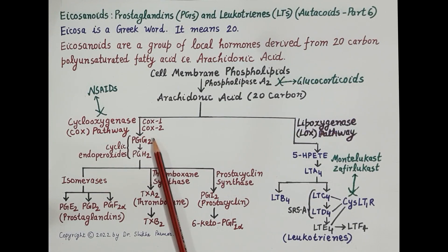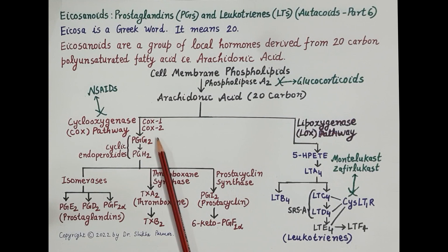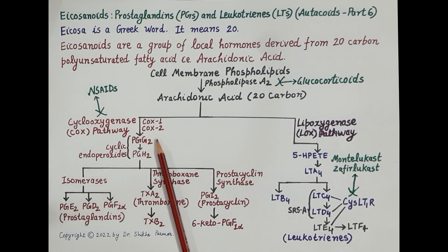COX-2 leads to inflammatory and pathological changes, producing prostaglandins that contribute to pain, fever, and inflammation. However, in the brain, COX-2 is found to be neuroprotective — it protects neurons.